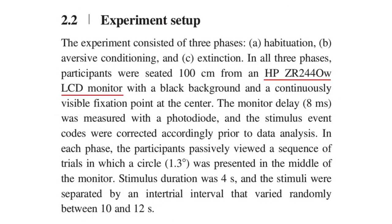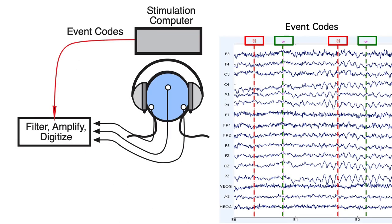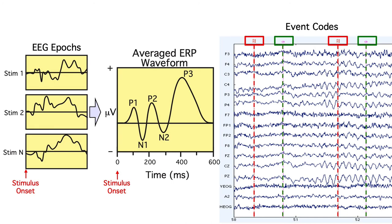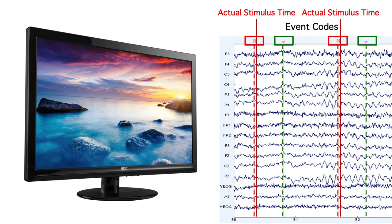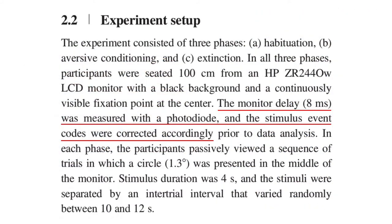Now let's talk about the stimuli and task. I want to start by pointing out this section, which explicitly states that we presented the stimuli on a specific model of LCD monitor. Recall that we need to send an event code from the stimulus presentation computer to the EEG recording computer to mark the onset time of each stimulus. This becomes time zero when we epoch the data and make our average ERP waveforms. If the event code doesn't occur at the exact time of stimulus onset, then all our latencies will be wrong. The problem with LCDs is that there's a delay between when the computer sends them the video signal and when the image actually appears on the screen. I've seen delays as long as 32 milliseconds. So we always measure the delay and shift the event code accordingly. In this experiment, it was only an 8 millisecond delay.